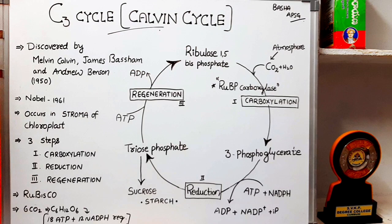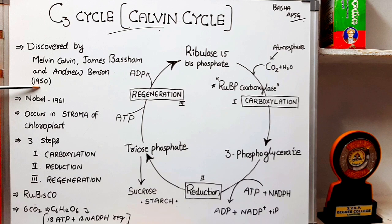Hello everyone. Today I am going to discuss about the C3 Cycle, that is also called as the Calvin Cycle. The C3 Cycle was first discovered by Melvin Calvin, James Bassham, and Andrew Benson in the year 1950. For this discovery, they got the Nobel Prize in the year 1961.